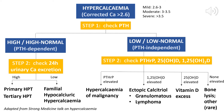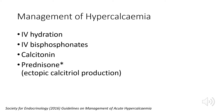The mainstay of treatment in hypercalcemia is IV fluids — and a lot of it. As a rule of thumb, you may start at 200–300 mL/hour of normal saline, going much more gently in patients prone to fluid overload such as those with CCF or renal impairment. IV fluids replace volume depletion and flush out calcium through the urine while diluting it in the serum.